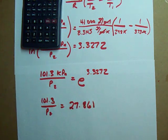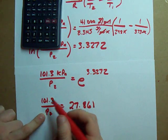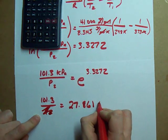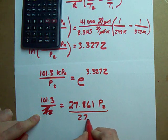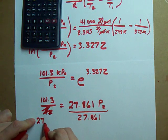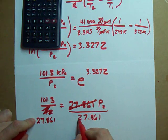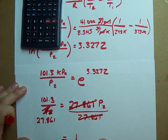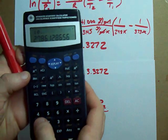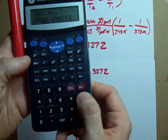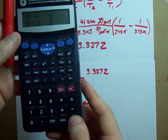And now I just need to solve for my P2. How do I undo division? It's with multiplication. And then I can divide both sides by 27.861 to cancel it out there. And I get 101.3 divided by that answer I just got.